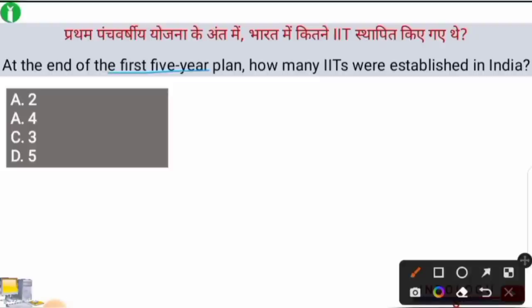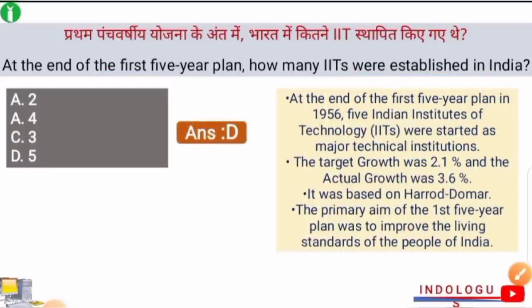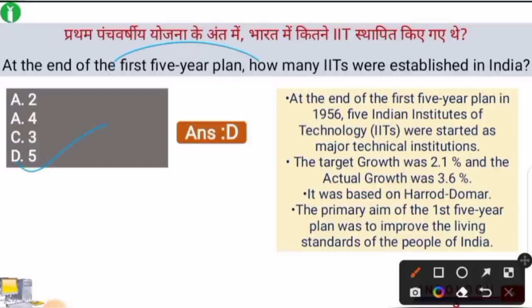Next question: At the end of the First Five Year Plan, how many IITs — Indian Institutes of Technology — were established in India? The right answer is option D — 5 IITs were established by the end of the First Five Year Plan in 1956 as major technical institutions. The First Five Year Plan had a growth target of 2.1%, and the actual growth achieved was 3.6%, meaning we gained an extra 1.5% above the target — making it a success.